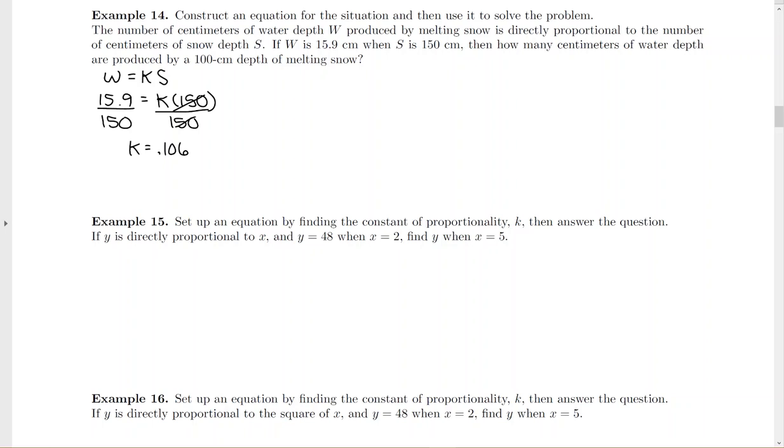And you're going to get K as 0.106. Don't round that to 0.11 or 0.1. If it's a terminating decimal, use all the decimal points. So then we go to write the equation to answer the rest of the problem. So W equals, so we found our constant of proportion or slope, if you will, 0.106, and then it was S.